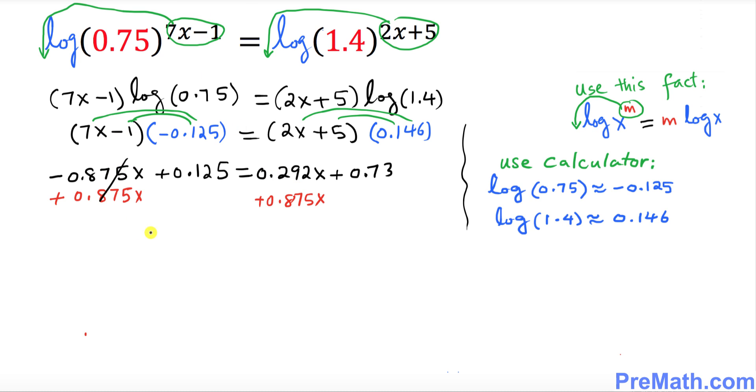So this thing is gone. On the left hand side we ended up with 0.125 equals to, I want you to add this thing up. This turns out to be 1.167x plus 0.73.